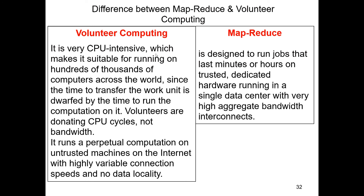Volunteer computing does not strain your bandwidth to a large extent. Hadoop, on the other hand, requires very high dedicated bandwidth — the network fabric is usually InfiniBand, around 56 Gbps. In volunteer computing, the bandwidth is spread across multiple network fabrics, technologies, and interconnects, and it runs perpetually across all these networks.